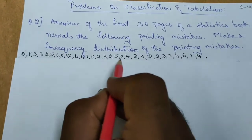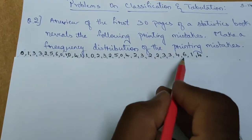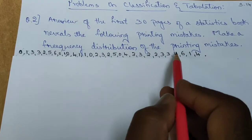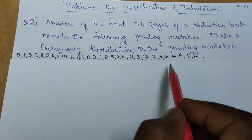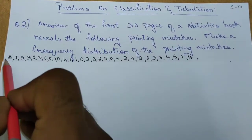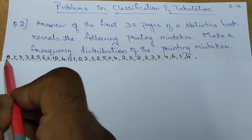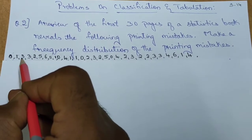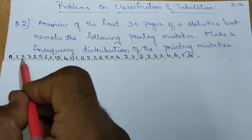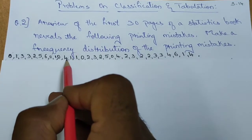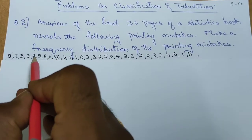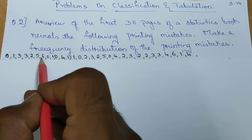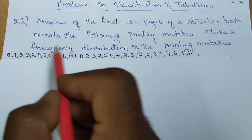Here we are going to find the number of printing mistakes. One page will have 0 mistakes, one page will have 1 mistake, one page will have 3 mistakes, one page will have 4 mistakes, another page will have 5 mistakes, and the maximum will be 6 mistakes.